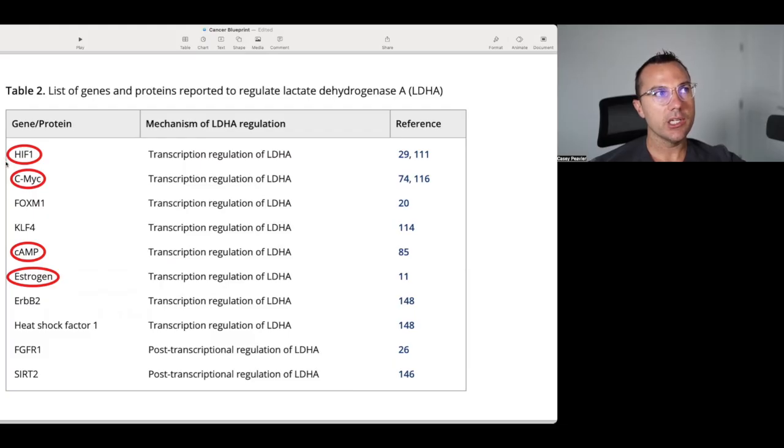We have a table and list of genes and proteins that are reported to regulate lactate dehydrogenase A. I've circled, in particular, HIF-1-alpha and CMYC because those are ones that we come back to over and over again. Some of the other ones, like estrogen and HER2-nu, are also related to the expression of LDHA. But as we'll see later, really, most of the growth factors have an effect here.